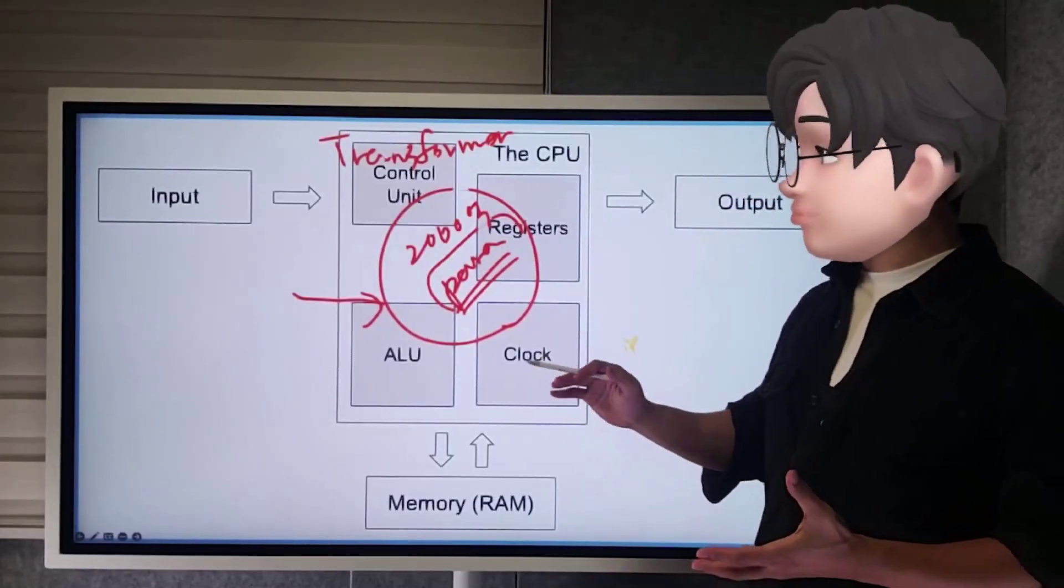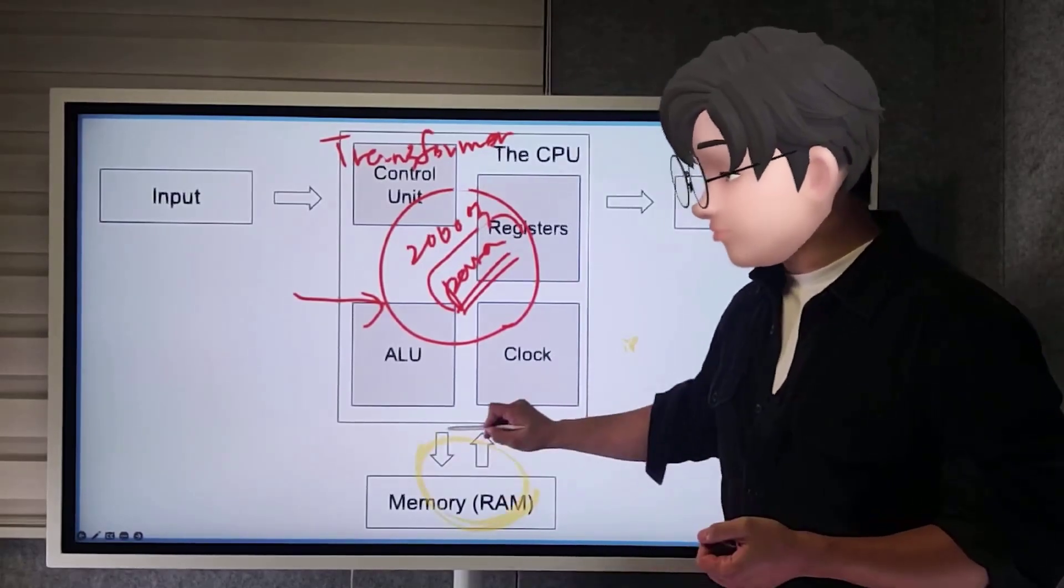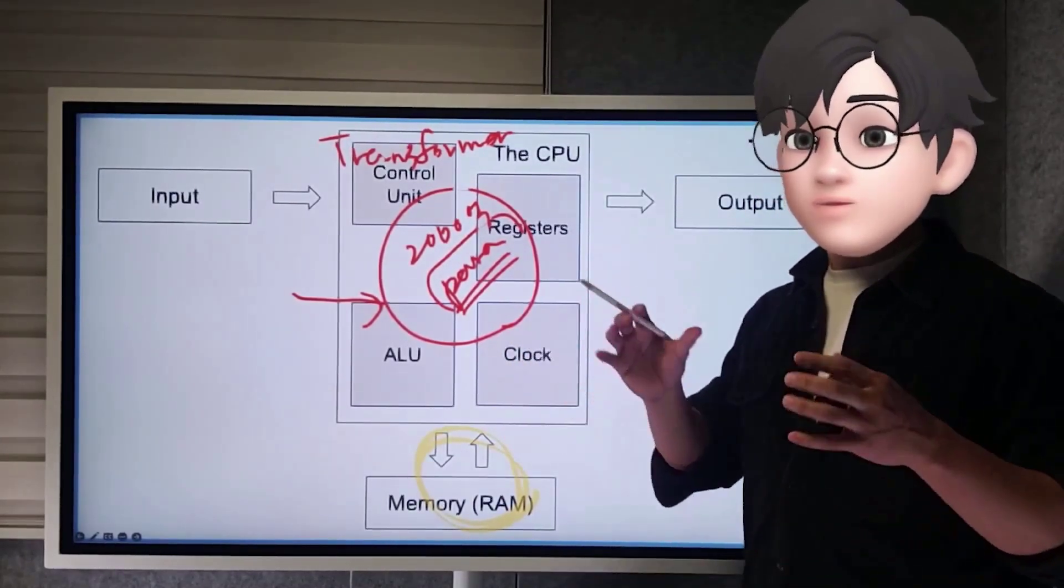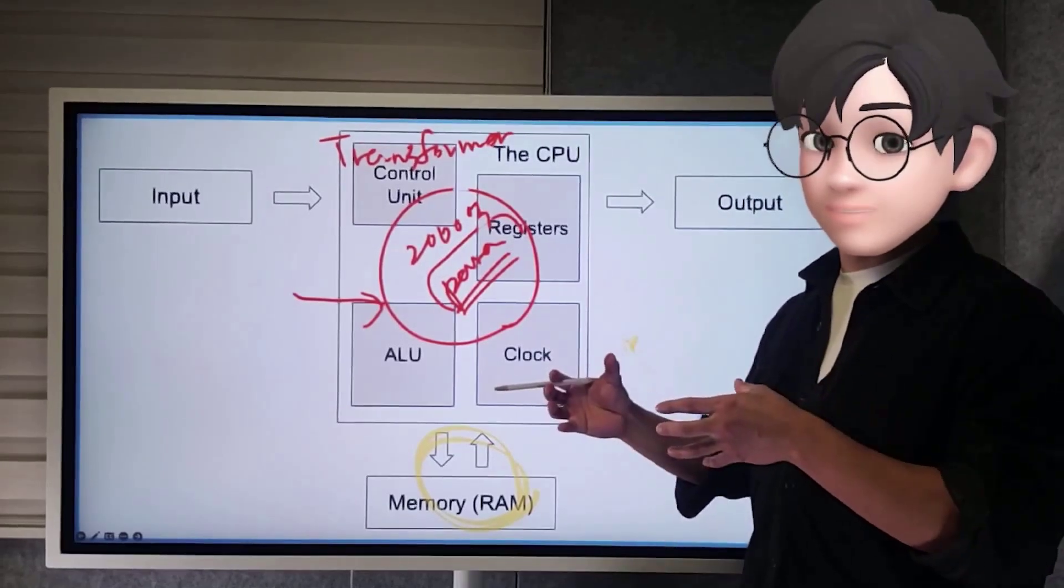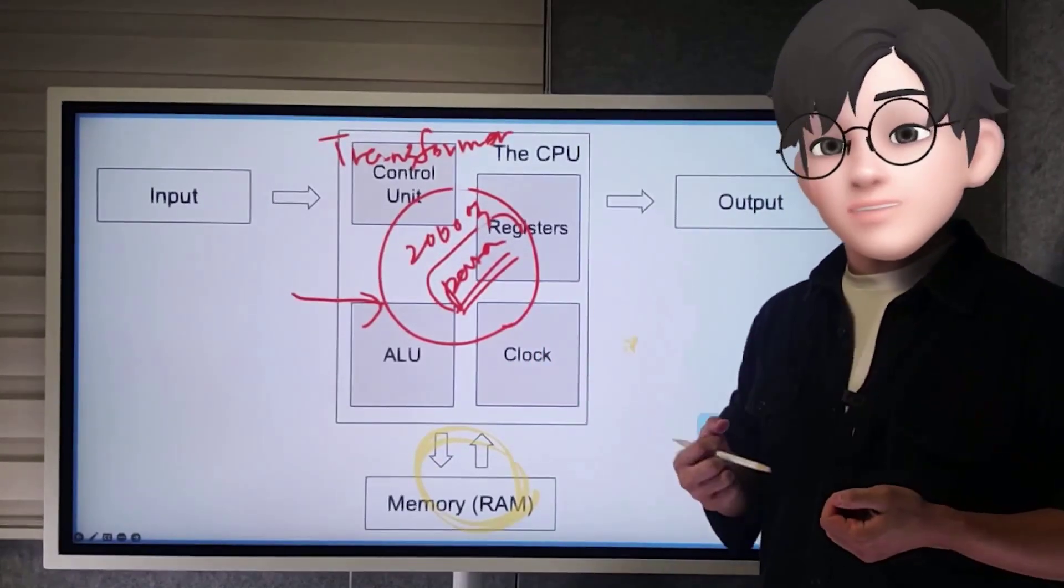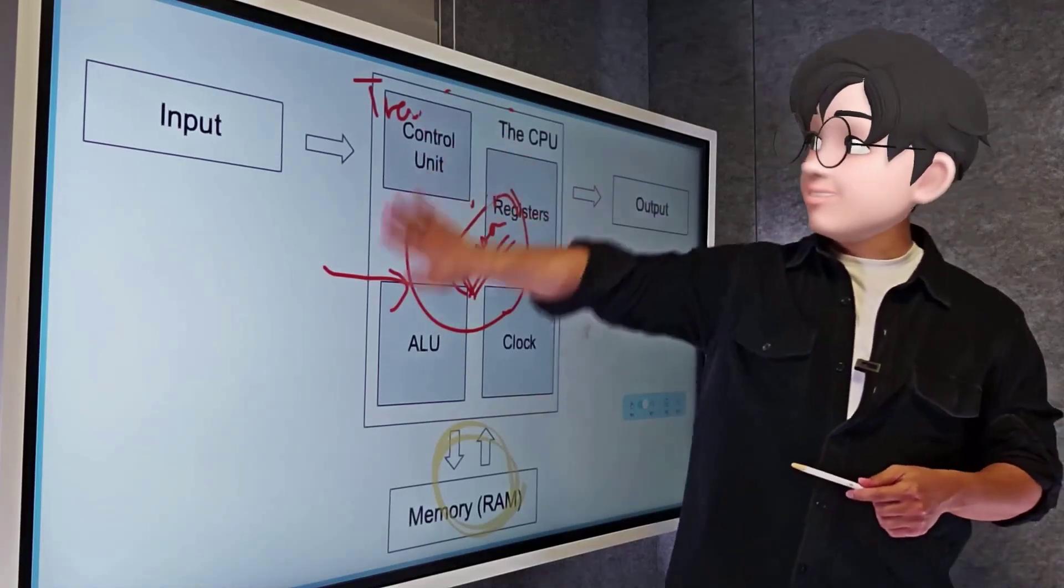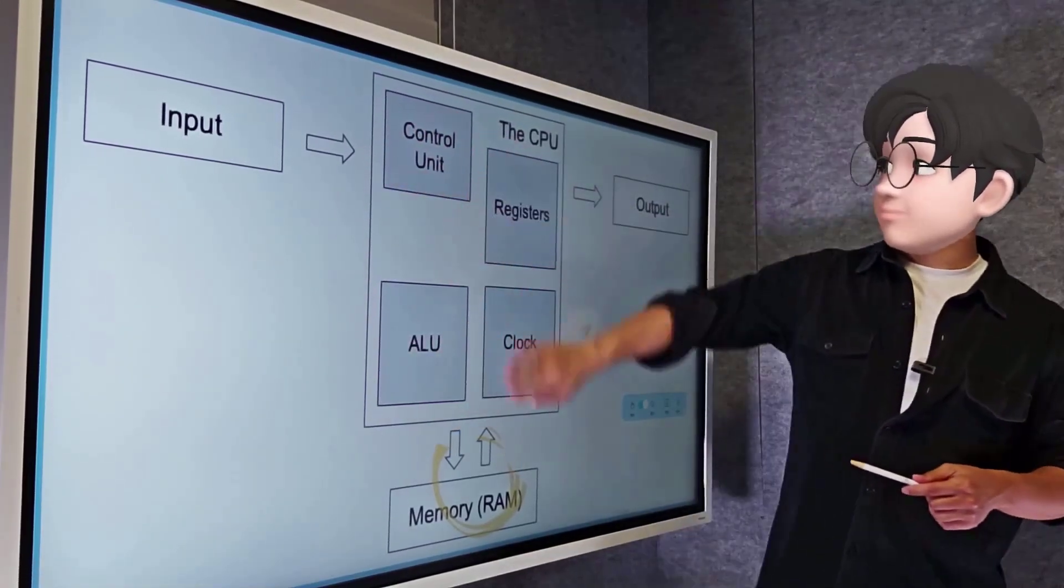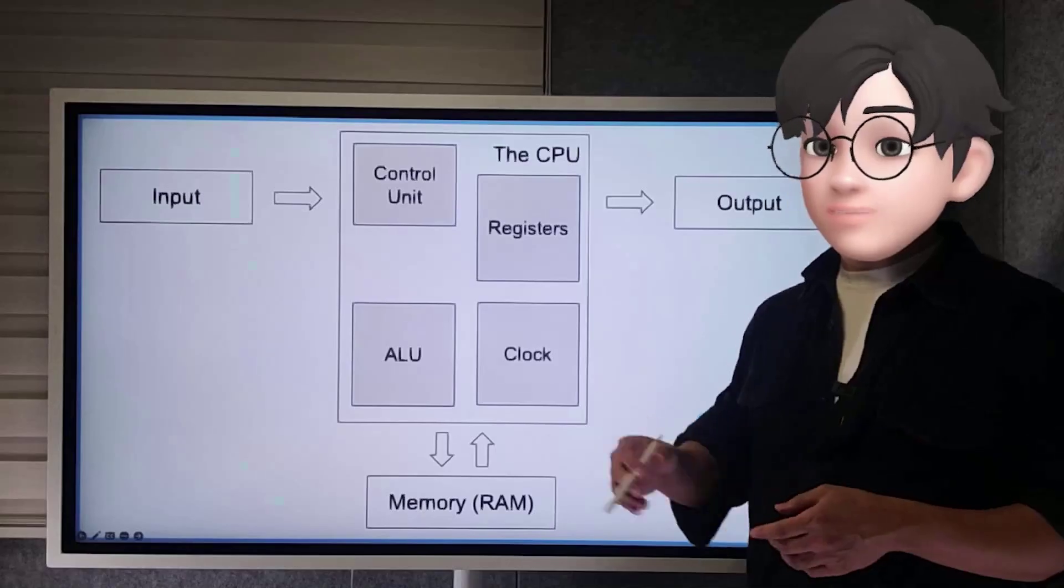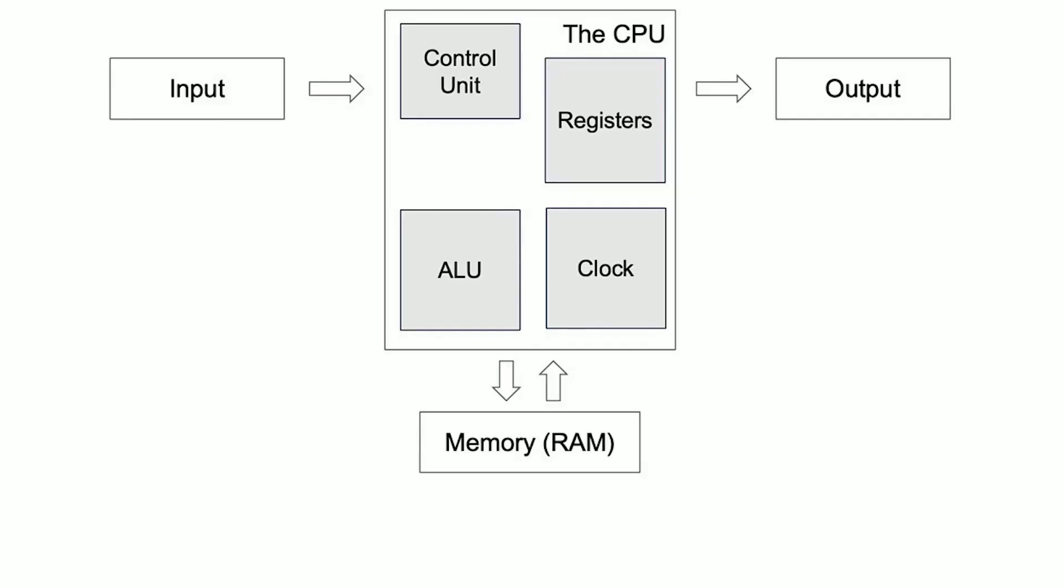However, in the case of Titan, it has a special feature called neural memory. This neural memory is essentially a neural network, so it has both short-term and long-term memory. By combining these, they have created an architecture that allows them to operate together. So, with Titan, you hear about things like 200 billion or trillions of parameters. In models like this, having a dedicated long-term memory allows for a clear separation of tasks.